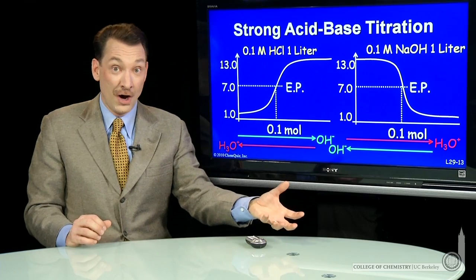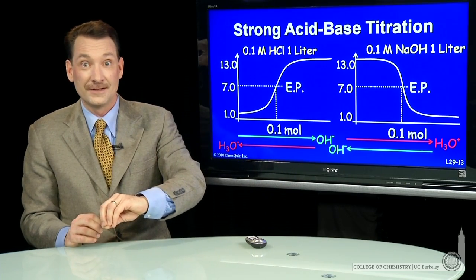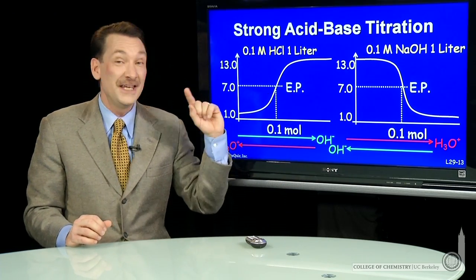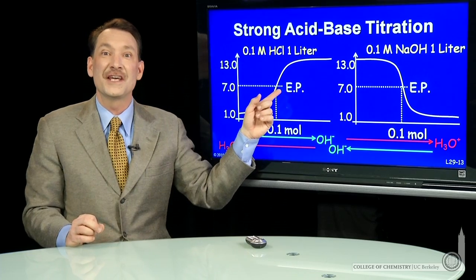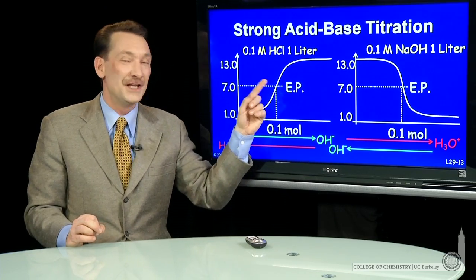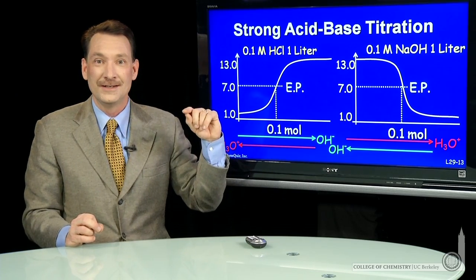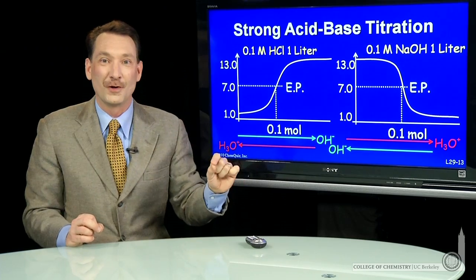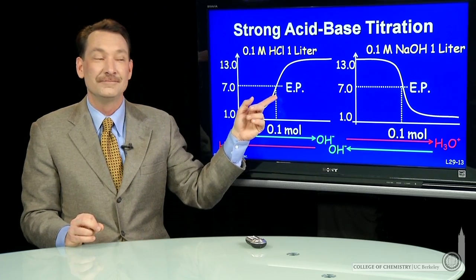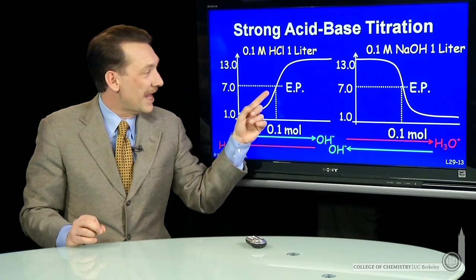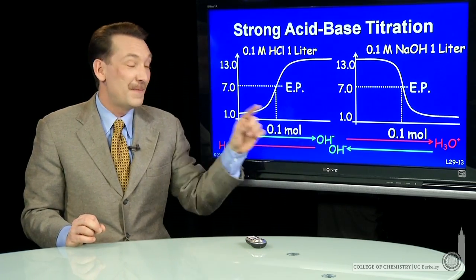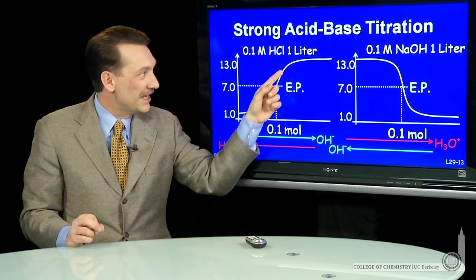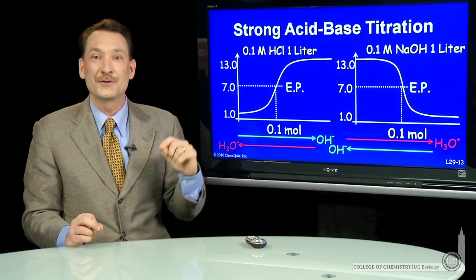If it's a strong acid and a strong base reacting together, then the pH at the equivalence point — or end point — where you've added one mole of base for every mole of acid, will be 7. As you continue beyond that, the base you're adding dominates the pH, and the pH rapidly rises to a basic level.